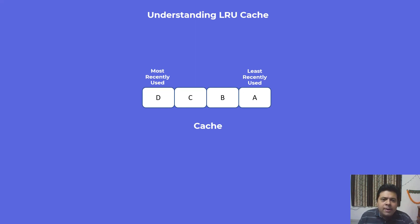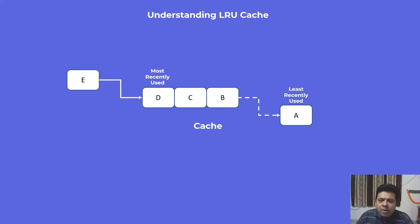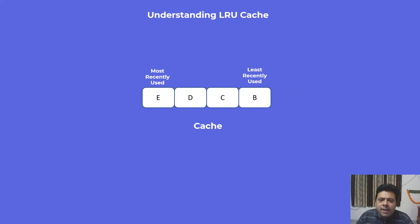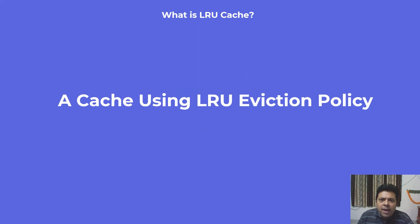If an element E is coming into the cache, we will be removing the least recently used element, which is element A. Once that element is removed, we have extra space and we insert element E into the cache. Now element E becomes the most recently used element, whereas element B becomes the least recently used after element A has been removed. This is basically a cache eviction policy where the least recently used property is used to evict an element. In a nutshell, that's what an LRU cache is — a cache using the LRU eviction policy.